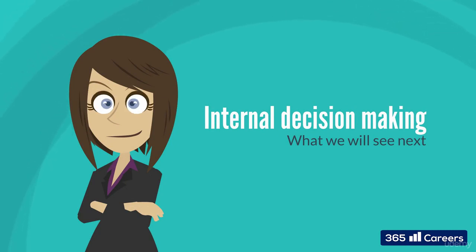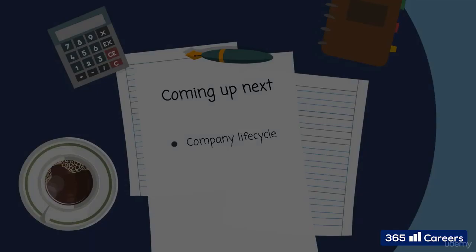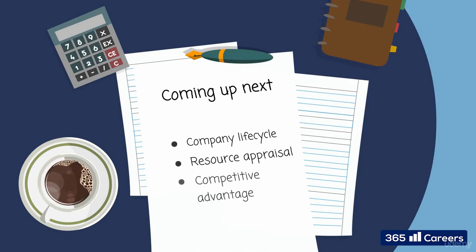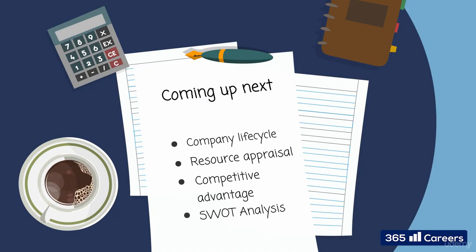Starting from this chapter, we'll learn about a company's internal strategic decision-making process. We'll learn about the different stages in a company's life cycle, about the way firms appraise their resources and how they use them to obtain a competitive advantage, about the popular SWOT analysis, and about the different strategies companies use to acquire a competitive advantage.